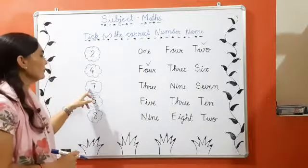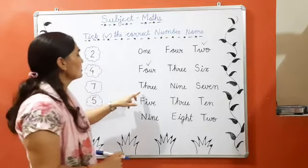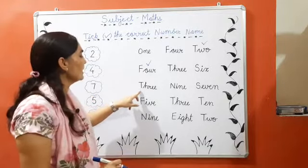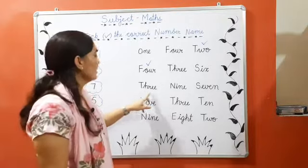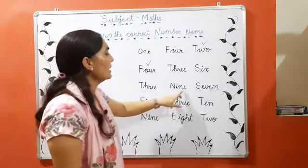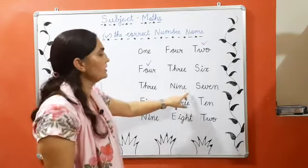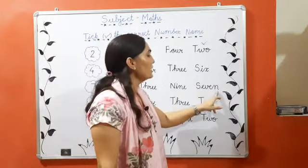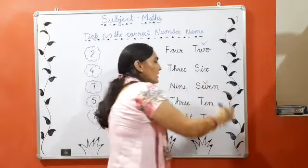Next is seven. Next number is seven. So read this spelling. T-H-R-E-E, three. N-I-N-E, nine. This is also not it. S-E-V-E-N, seven. Found it, so tick this one.